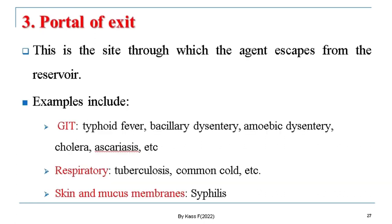The third important element of the chain of disease transmission is portal of exit. Portal of exit is the site through which the agent escapes from the reservoir. Examples of portal of exit include the gastrointestinal tract — for typhoid fever, bacillary dysentery, amoebic dysentery, cholera, and ascariasis — the respiratory tract — for tuberculosis and common cold — and skin and mucous membranes — for example, syphilis.